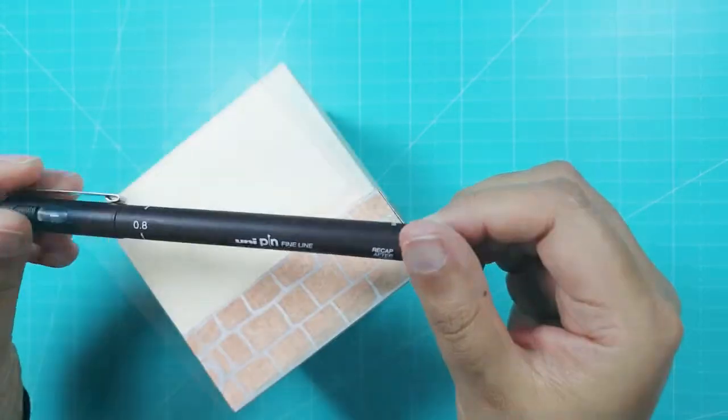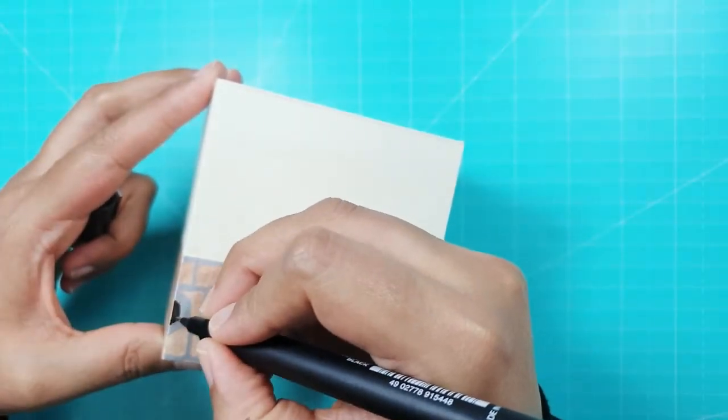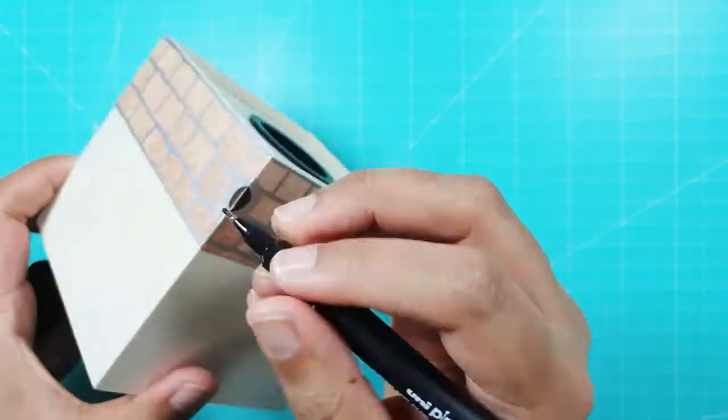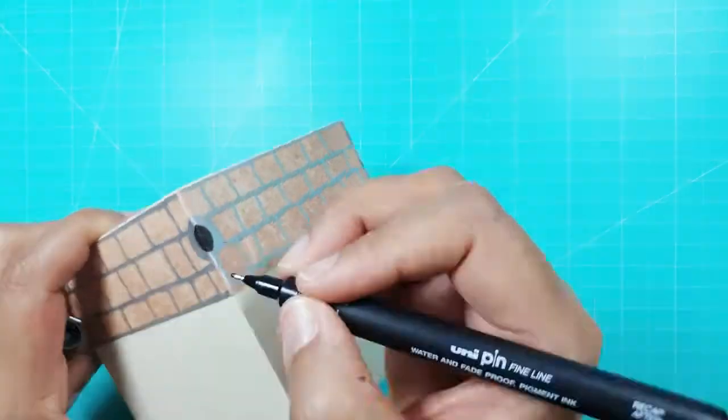I used a black drawing pen this one has a 0.8 size nib to color in the black stone. You could use a black marker or black paint instead.